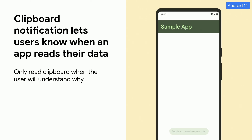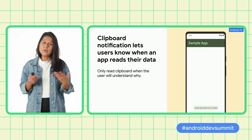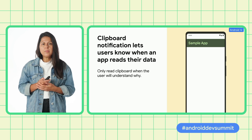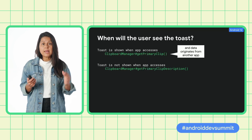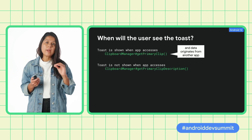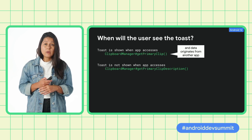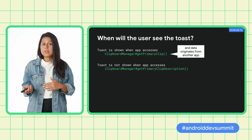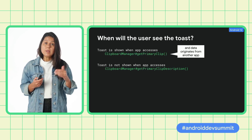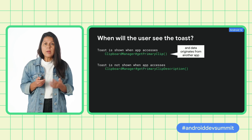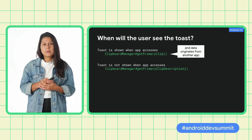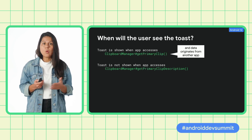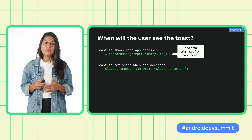We know how sensitive clipboard data can be. Users frequently copy emails, addresses, and passwords. Android 12 notifies users every time an app reads from their clipboard data. Users will see a toast at the bottom of the screen each time an app calls Get Primary Clip. The toast doesn't show if clipboard data originates from the same app. You can minimize access by first checking Get Primary Clip Description to learn about the type of data in the clipboard. The recommended best practice is to only access the clipboard when the user understands why.